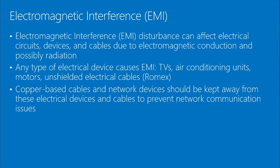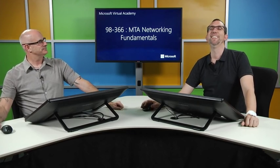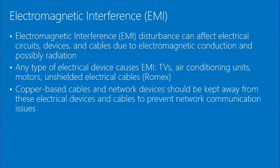EMI — electromagnetic interference — is a disturbance that can affect electrical circuits, devices, and cables due to electromagnetic conduction and possibly radiation. Any type of electrical device can create EMI: TVs, air conditioning units, motors, and unshielded electrical cabling.